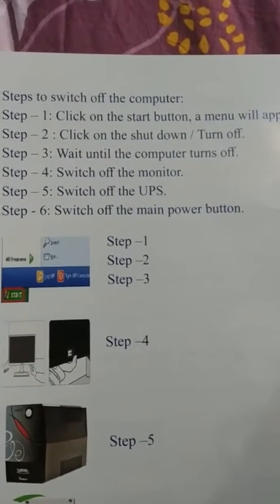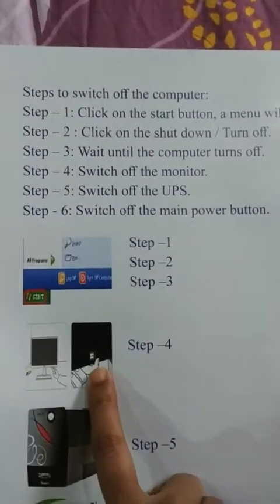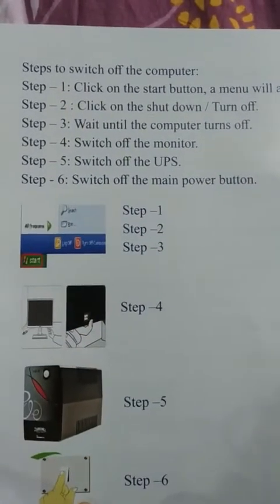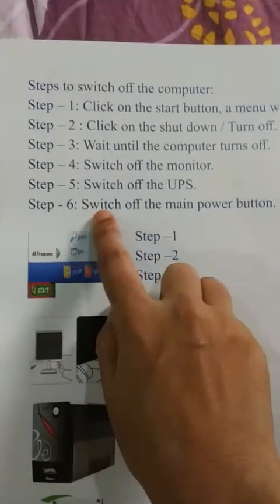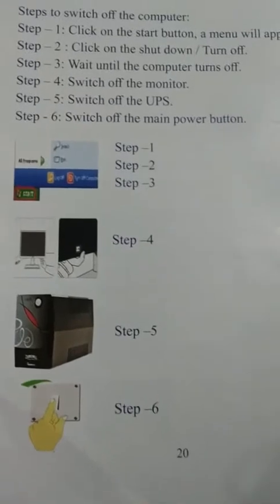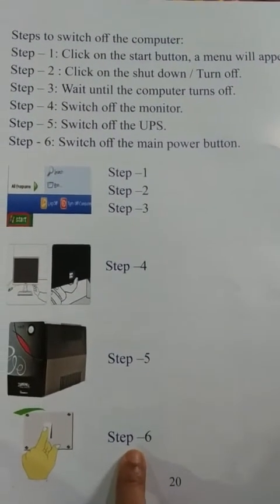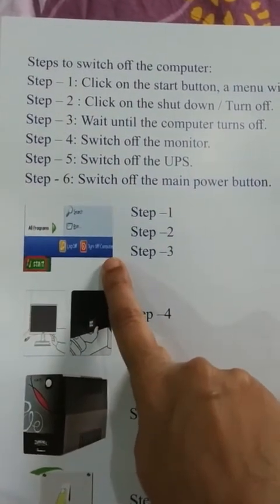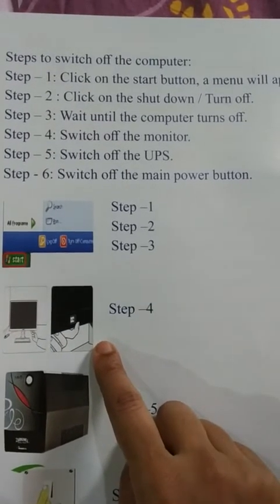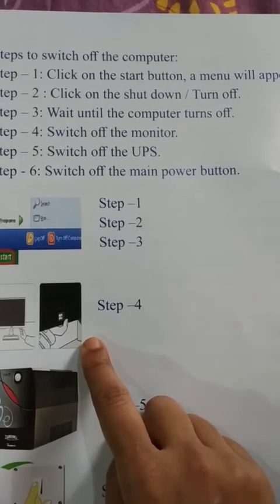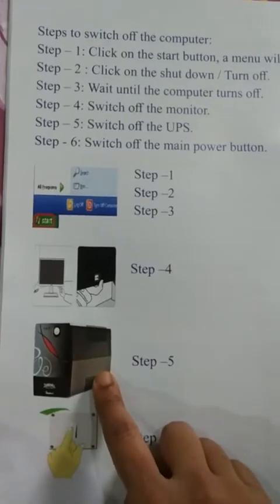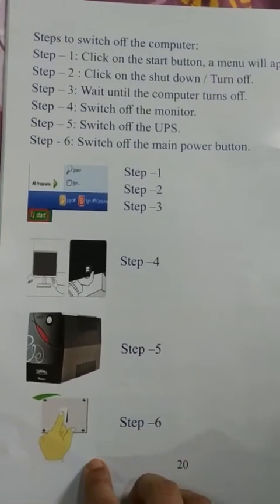Step 4: Switch off the monitor. Then switch off the UPS. Step 6: Switch off the main power button on the switchboard. So to summarize: click on the start button first, then turn off the computer, wait until it totally turns off, then switch off the monitor, then the CPU, then the UPS, then the main power button.